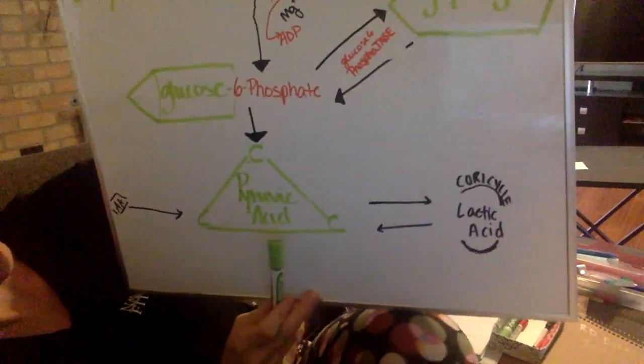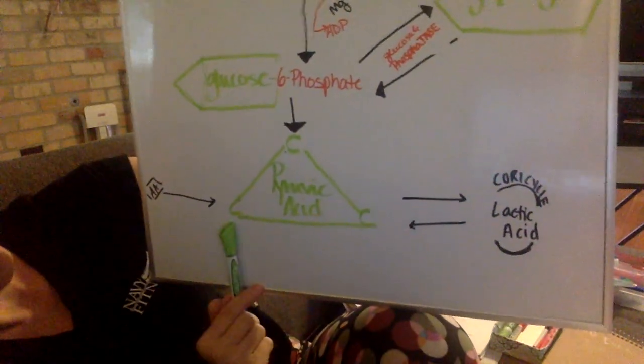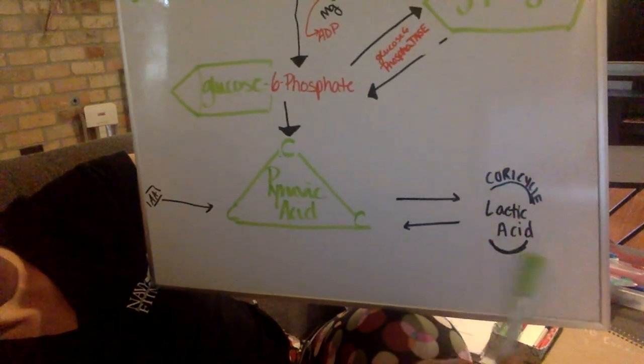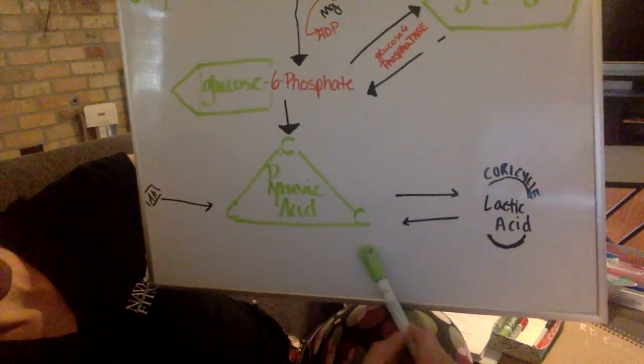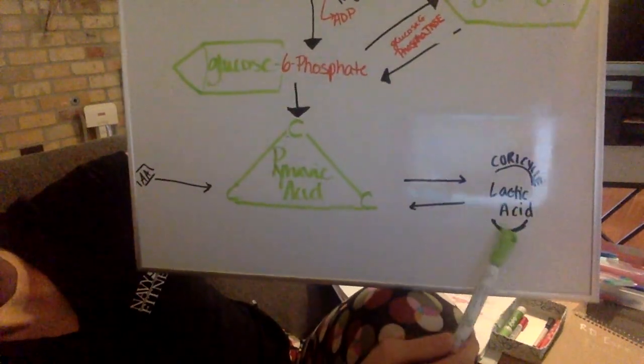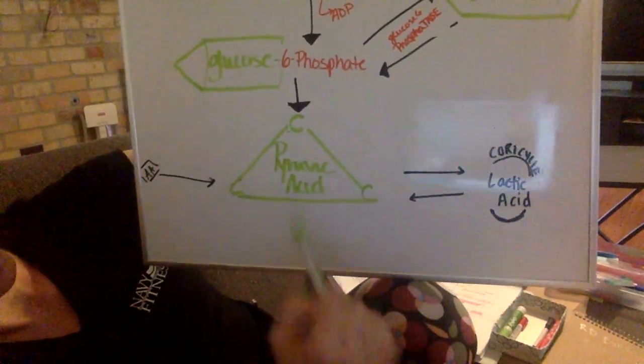Pyruvic acid—amino acids could be made into pyruvic acid. Pyruvic acid can also go into the Cori cycle and make lactic acid. That's an anaerobic reaction. It can go back and forth, that is reversible. In our next video, we'll talk about the Cori cycle and what's going on there.